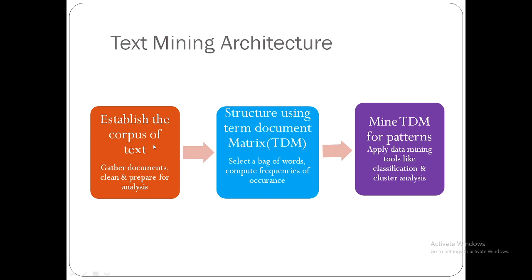The text and documents are first gathered into a corpus and organized. The corpus is then analyzed for structure, resulting in a matrix mapping important terms to source documents. Finally, structured data is analyzed for word structures, sequences and frequencies.